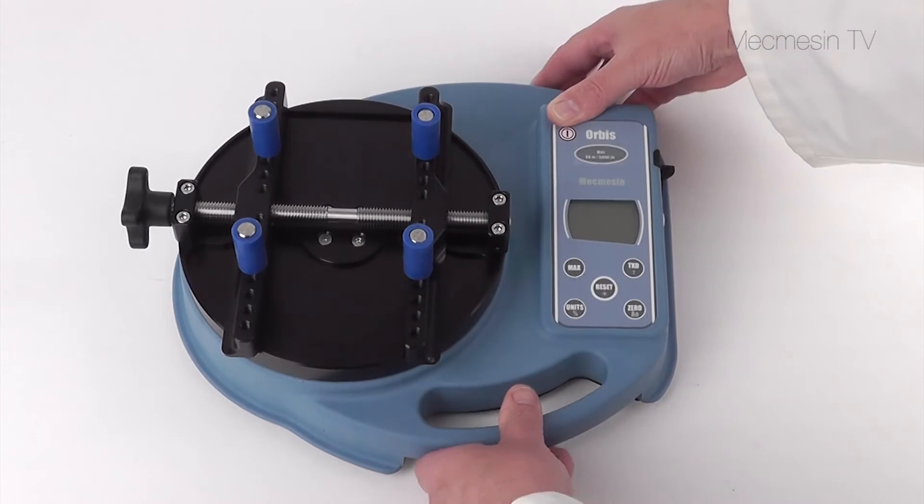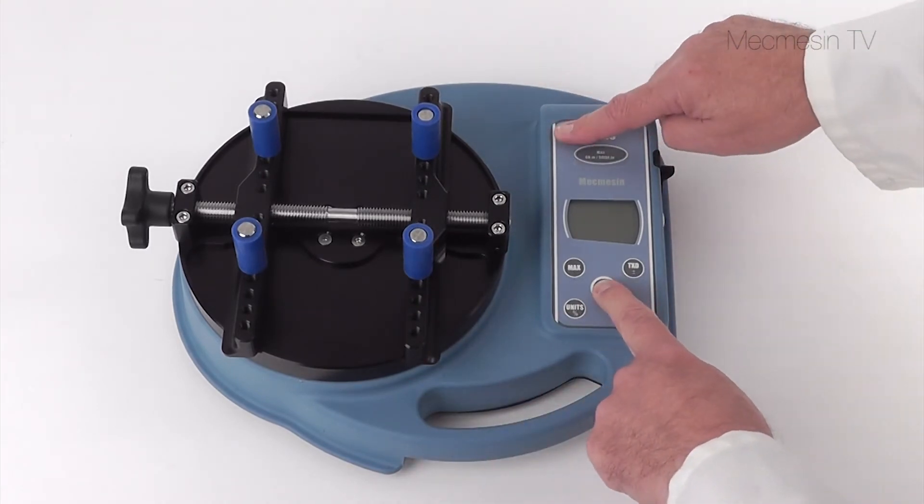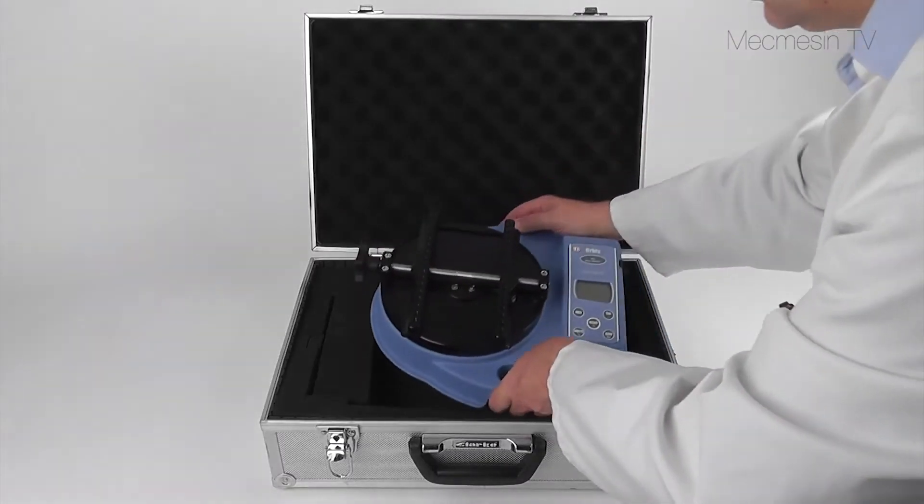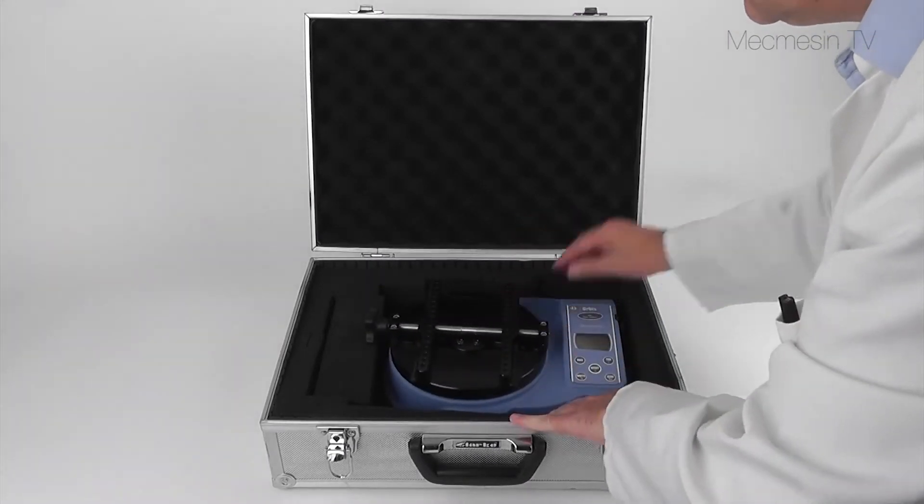The Orbis is powered by rechargeable batteries, which means it can be used even where there's no mains power. Weighing just 3 kilos, the Orbis is highly portable.